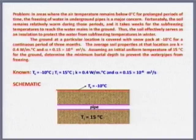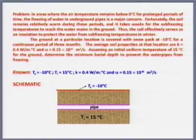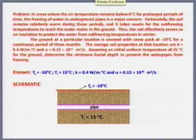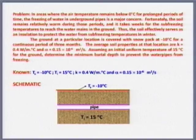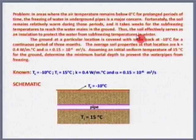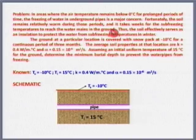Now we go to this numerical problem. In areas where air temperature remains below 0°C for sufficiently long periods, freezing of water in underground pipes is a major concern — this happens in cold countries and cold places. Water freezing causes expansion due to anomalous behavior below 4°C, and you also lose water for consumption.